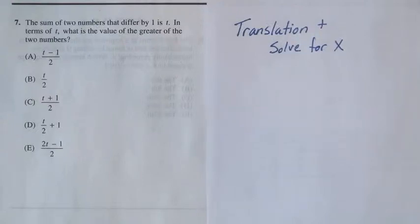Question seven reads, the sum of two numbers that differ by one is t. In terms of t, what is the value of the greater of the two numbers?